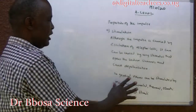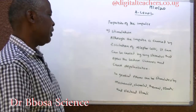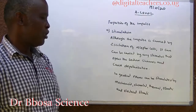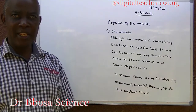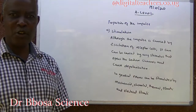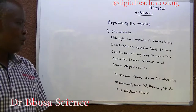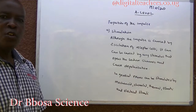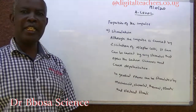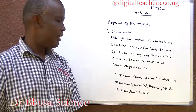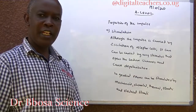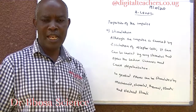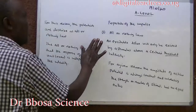In general, nerves can be stimulated by mechanical, chemical, thermal, osmotic, and electrical stimuli.